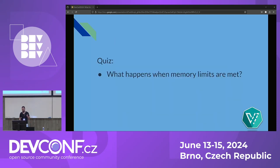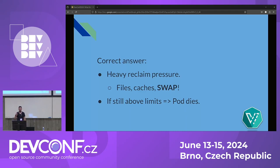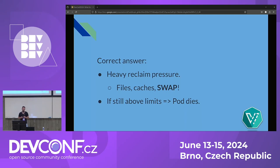What happens when a pod reaches the memory limit? Before the pod dies, the kernel will put the pod under heavy reclaim pressure and do anything it can to free memory below the limit — freeing files, open files that could be flushed back to disk, caches, kernel structures. Usually it's not a huge amount that can be reclaimed, so you'd get OOM-killed right away. But with swap, we can reclaim gigabytes of memory — which is a game changer and really crucial to save pods from crashing.